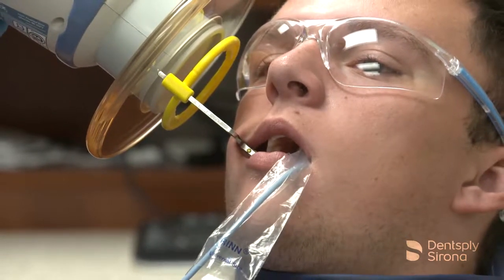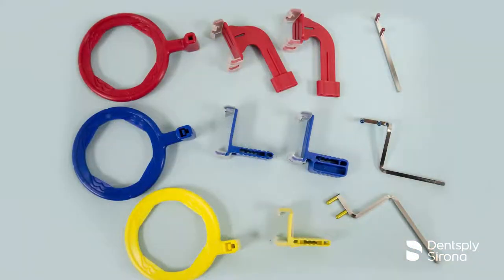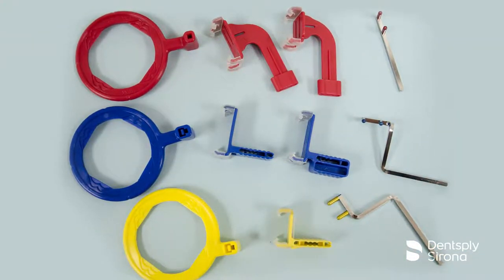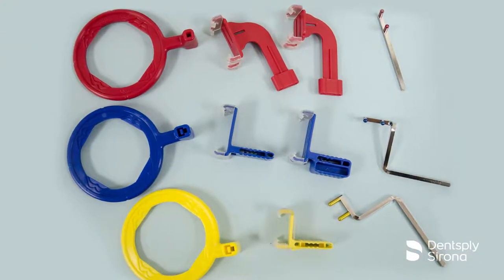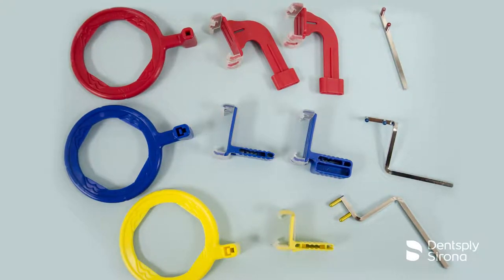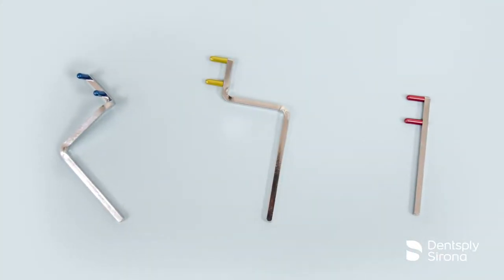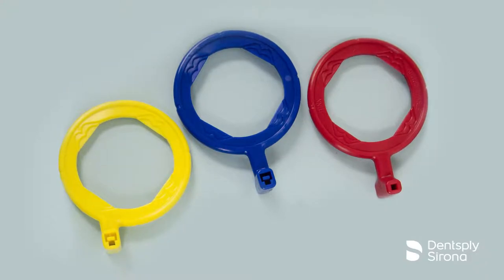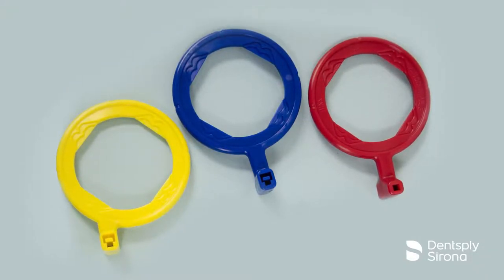The XCP short arm aiming device uses the XCP DS-FIT universal sensor holder and the traditional arm and ring sets, which consists of three metal arms and three color-coded rings corresponding to the area they will be used in the mouth.